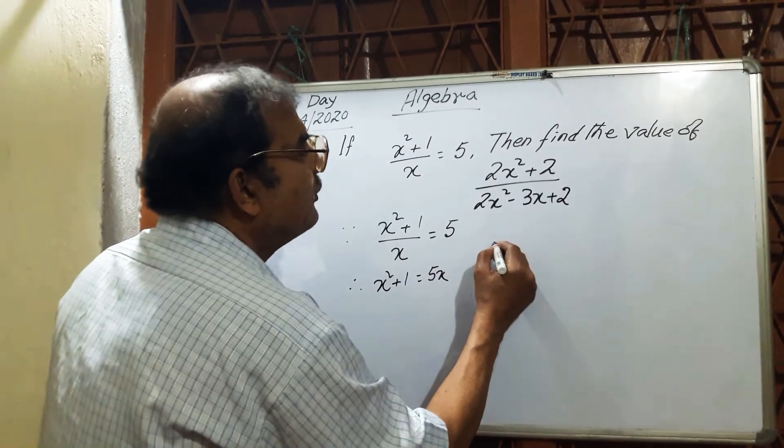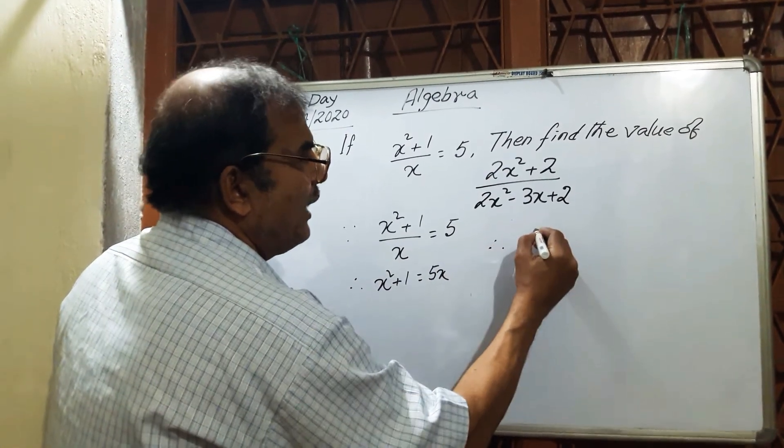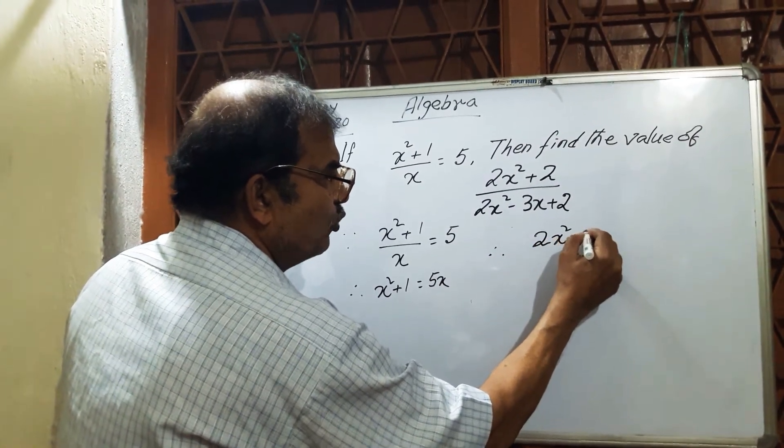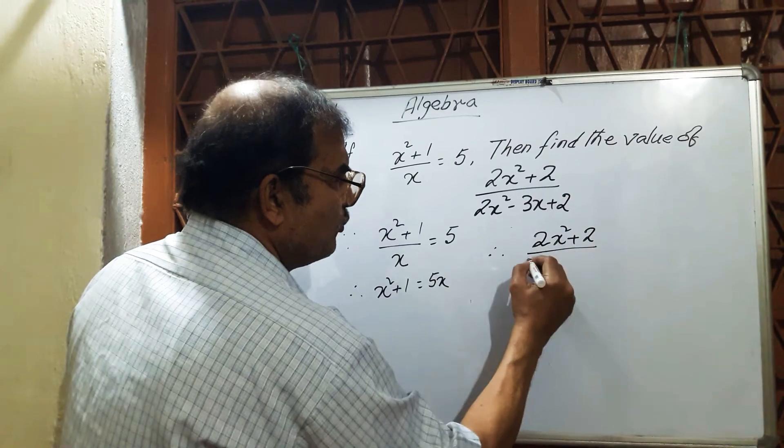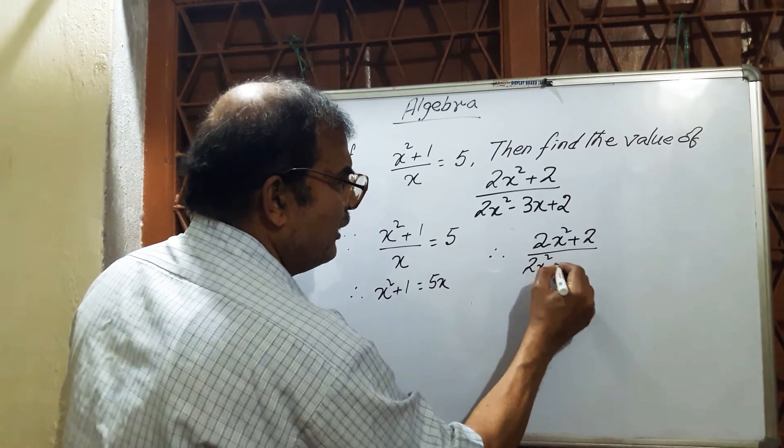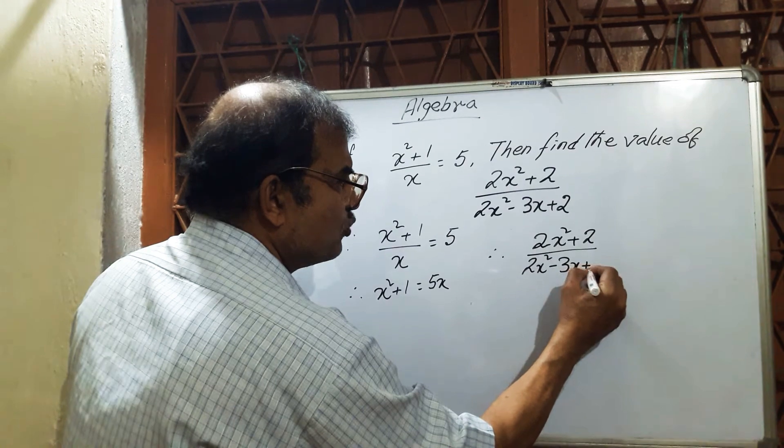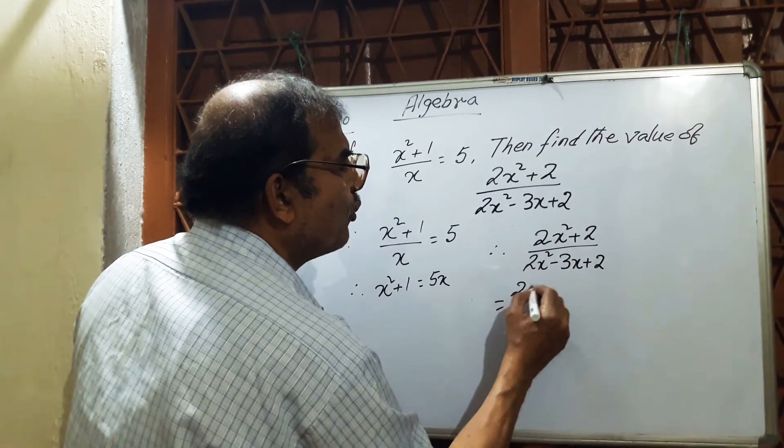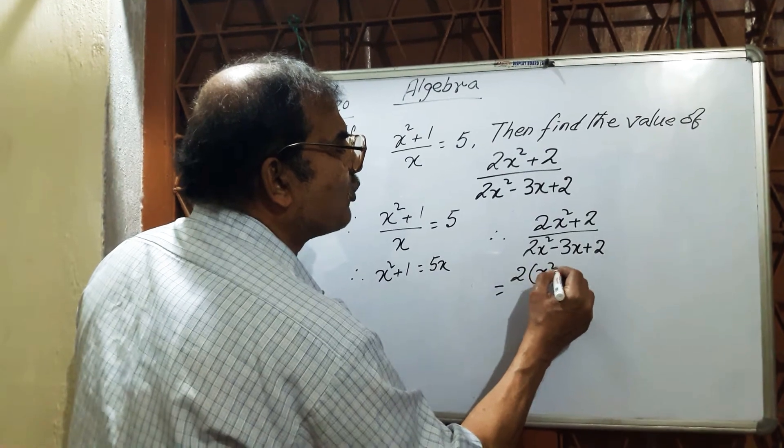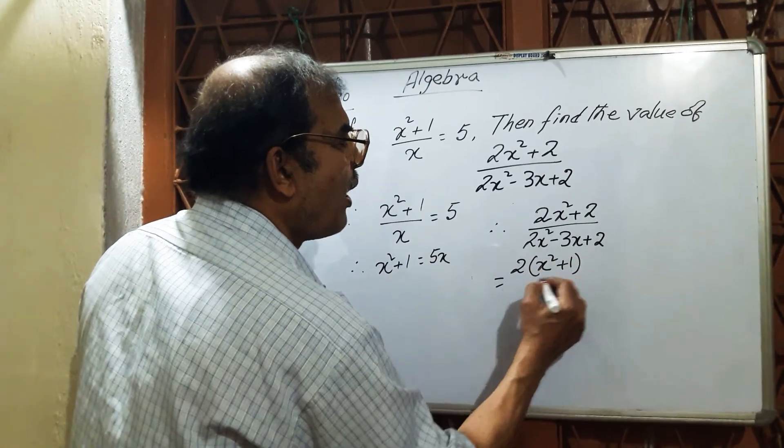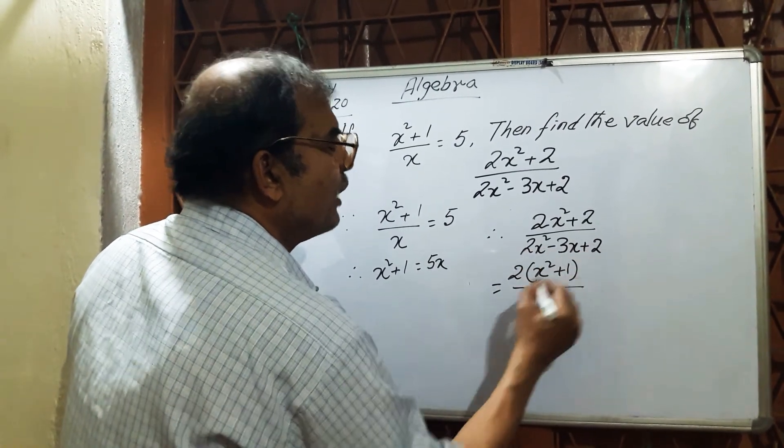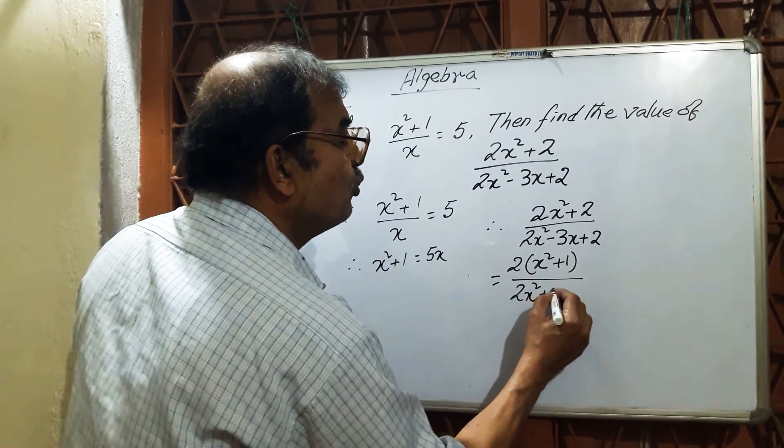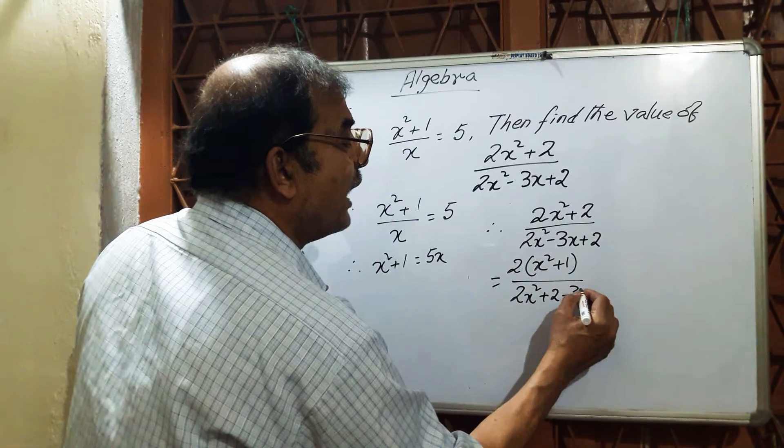Therefore, I can write (2x² + 2)/(2x² - 3x + 2) equals 2(x² + 1) divided by 2x² + 2 - 3x. Then, 2(x² + 1)...